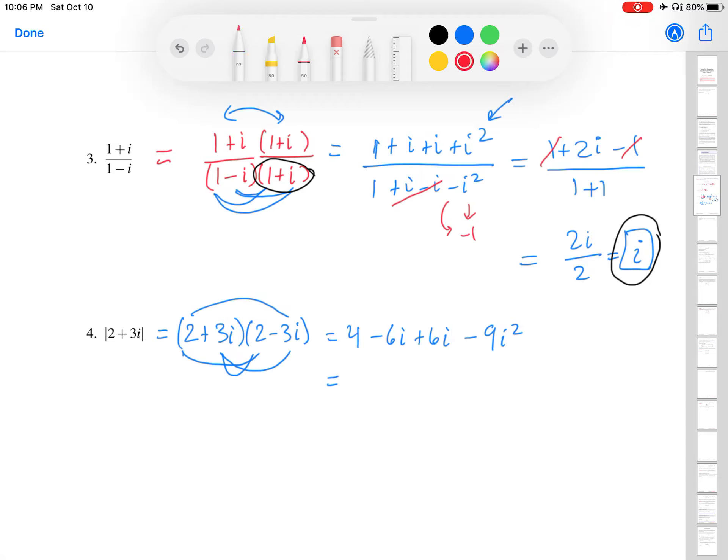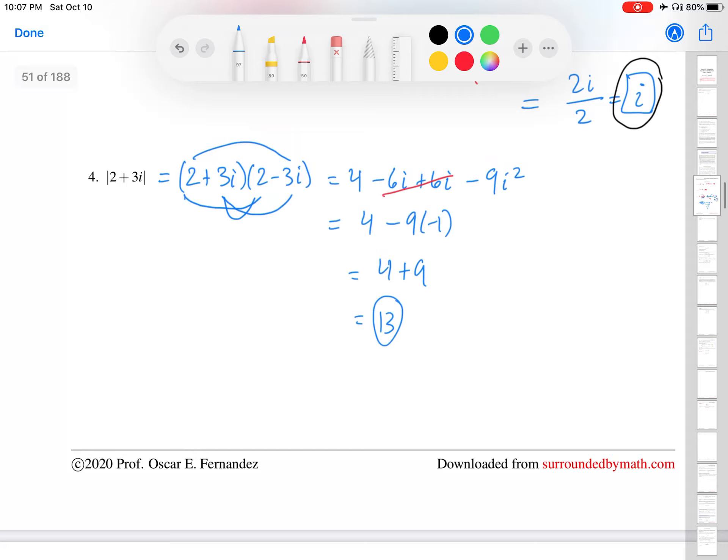All right. So the plus 6i minus 6i, that goes away. And then I have i squared is negative 1. So I get 4 plus 9, which is 13. And that is my answer for that one. And that's it.